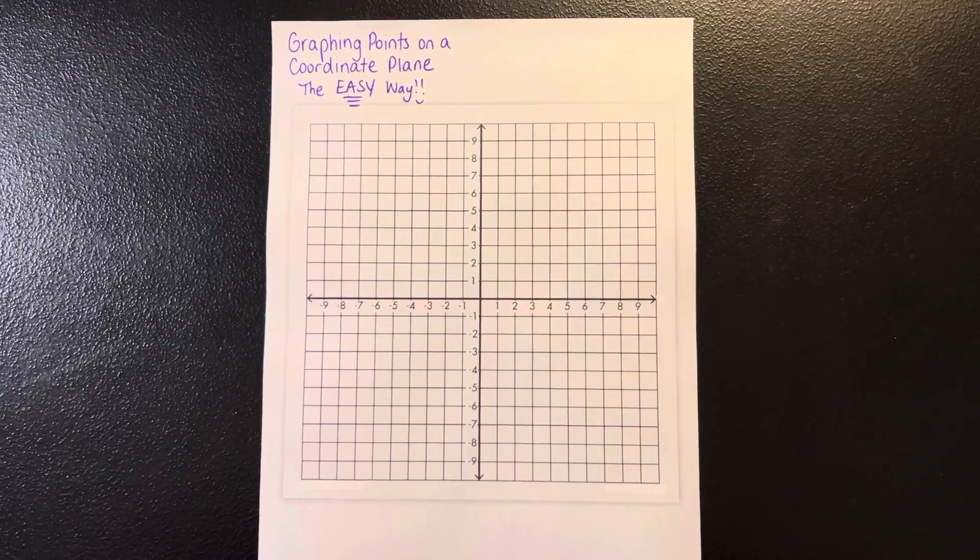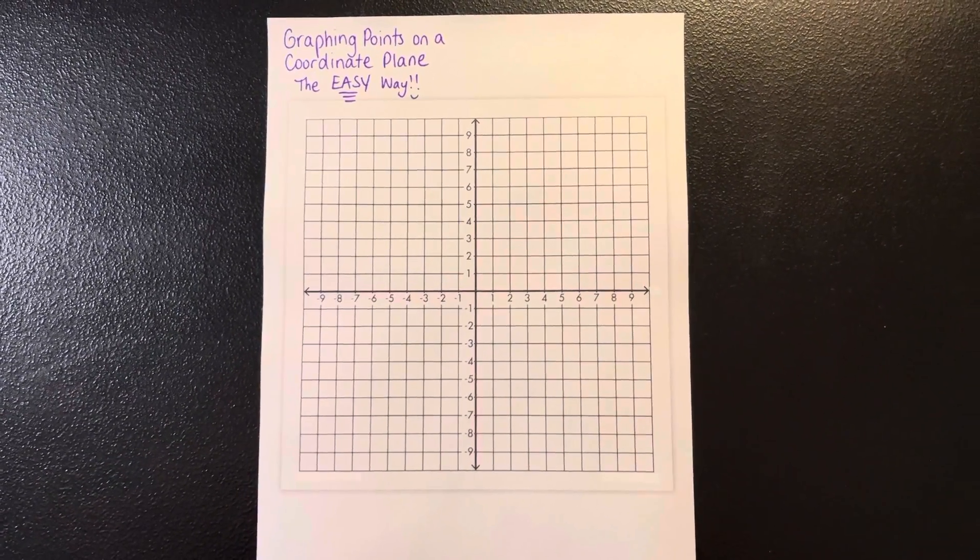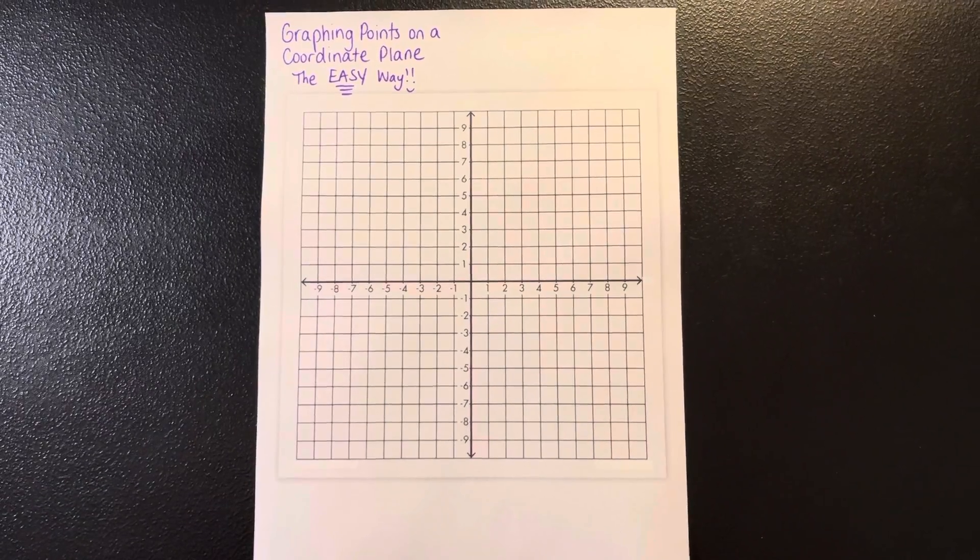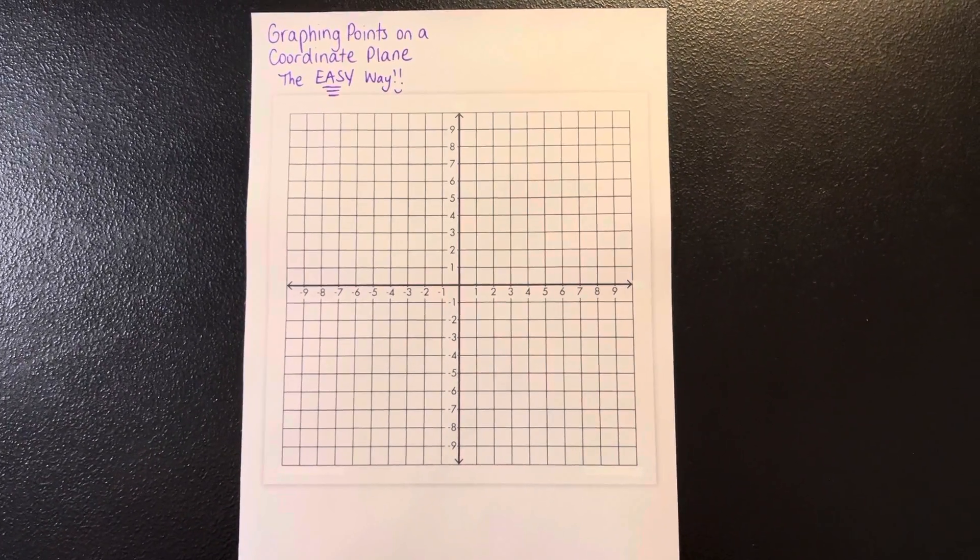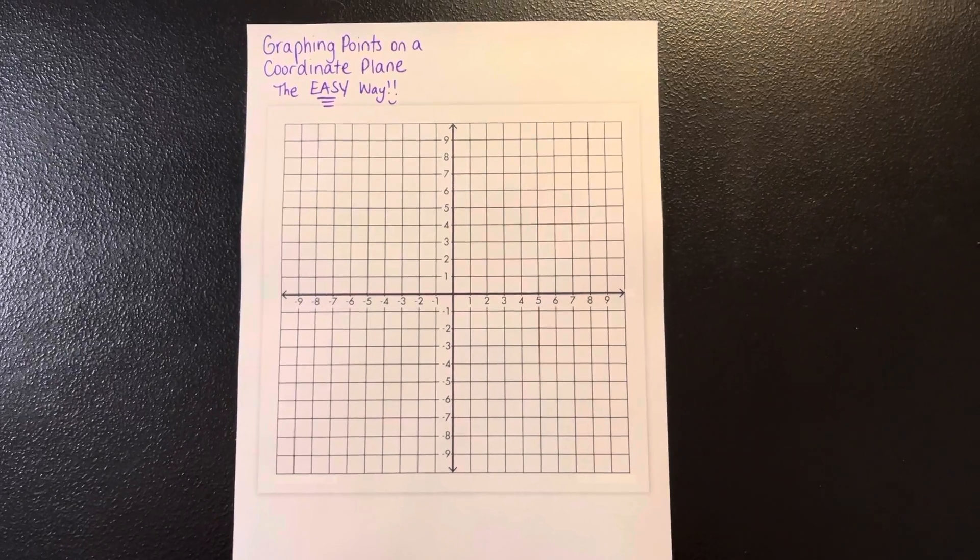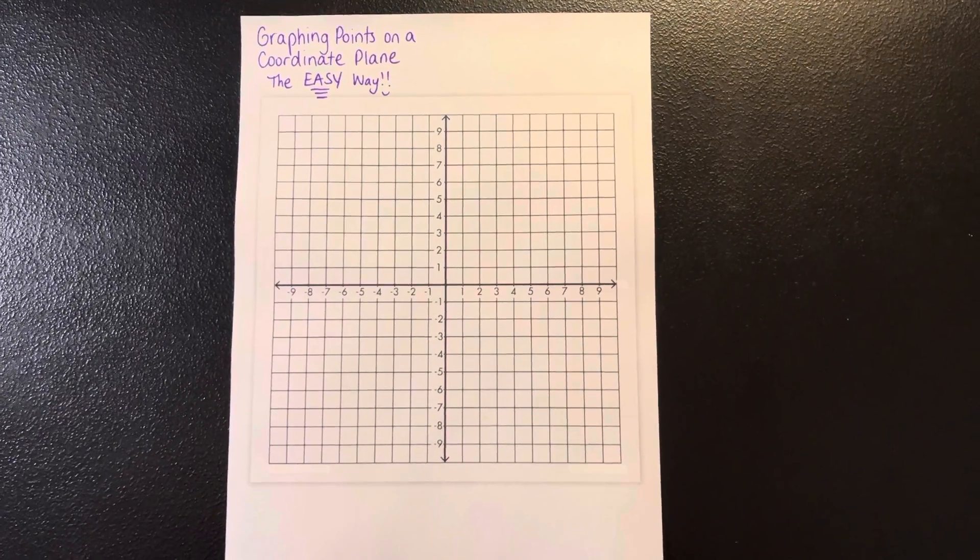Now when I say the easy way, I'm just giving you a different way to think of graphing in order to remember the order. When you graph points, the order is the most important because if you switch the order up, you're going to get the graphic incorrectly.